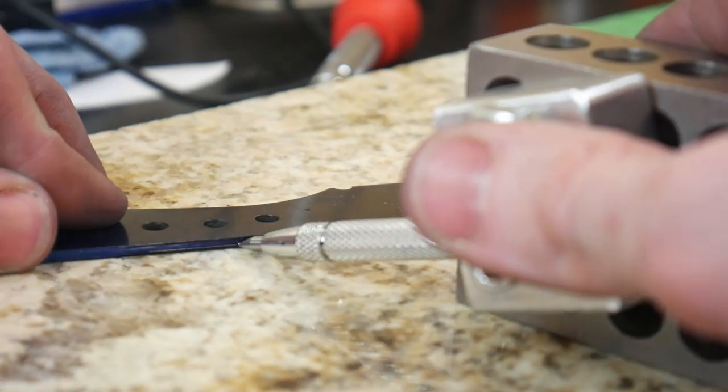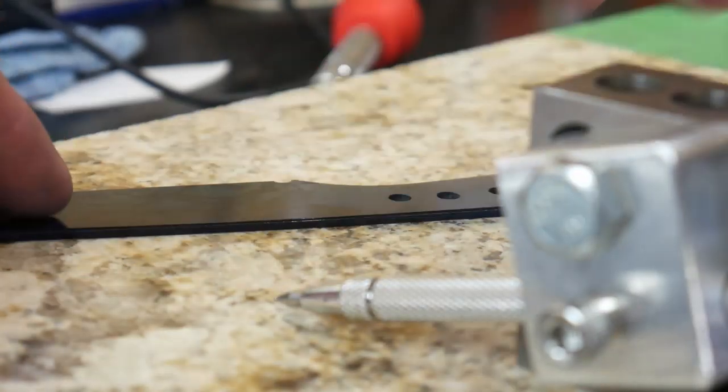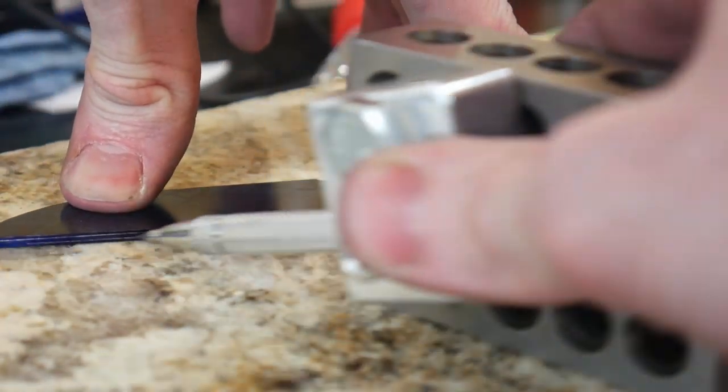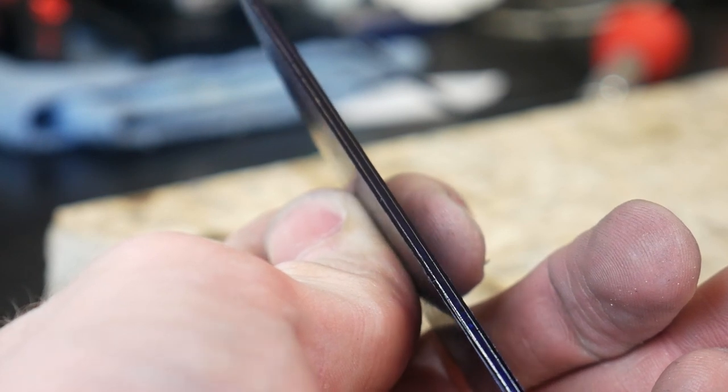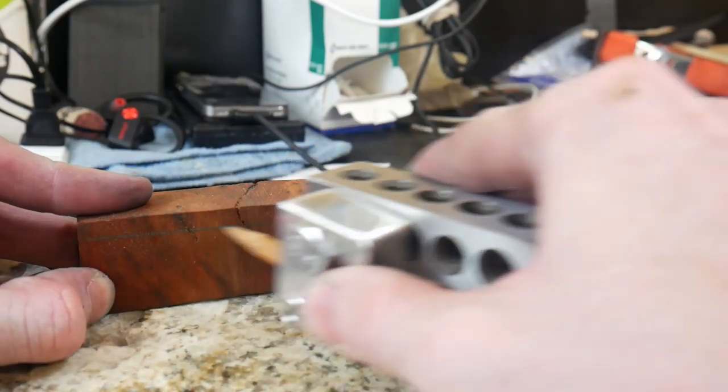With the carbide scribe in the fixture, you can set it up pretty close to the granite table and scribe in your grinding targets for your edge or for a clip or for things of that nature.